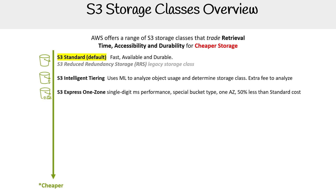The next one is S3 Express One Zone, which provides single-digit millisecond performance — so it's super fast. It has its own special bucket type and only operates in one availability zone, which is why it's called One Zone. It's 50% less than standard cost, but if that availability zone gets destroyed, you can lose your data, so there might be some sensitivities around that.